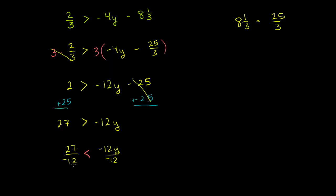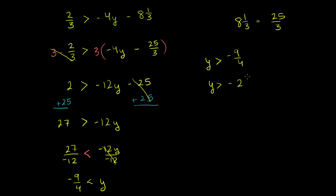So 27 divided by negative 12 — both are divisible by 3 — dividing numerator and denominator by 3 gives negative 9 over 4. The right side simplifies to y. So negative 9/4 is less than y, which means y is greater than negative 9/4. And if you want to write it as a mixed number, 9/4 is 2 and 1/4, so y is greater than negative 2 and 1/4.